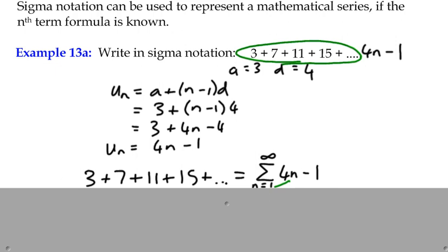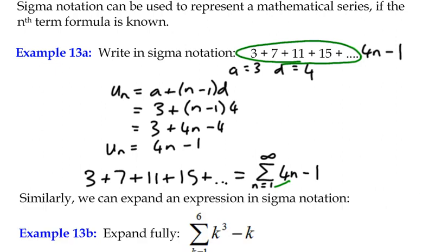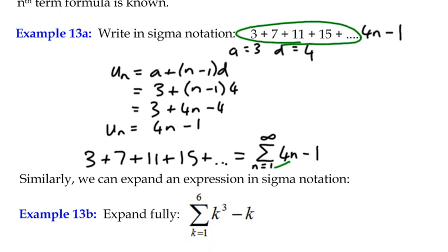The second part is going the other way. If I can just get rid of that. It's not going for some reason. There we go. If we know the summation expression, we can actually then change that back into the number series.